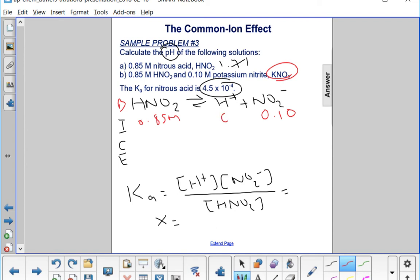And we have no H+. We have minus x, that'll decrease. Each product will increase plus x there, plus x, plus x. So we have 0.85 minus x, x, and 0.1 plus x.